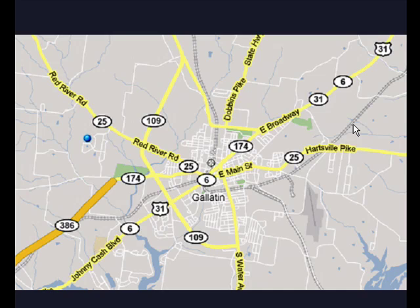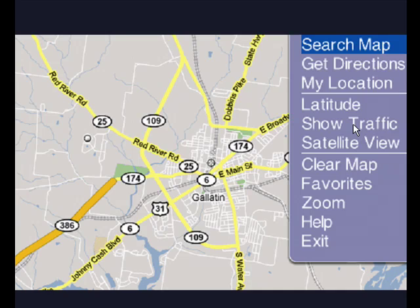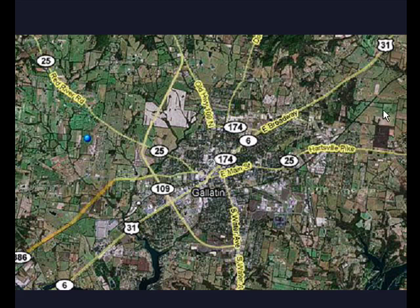So in order to go to satellite view, click the BlackBerry menu button. When that comes up, scroll down to satellite view and push the trackball, or touch the touchscreen on your BlackBerry Storm, and you see we're over Gallatin, Tennessee, but we're seeing it in a whole new way.